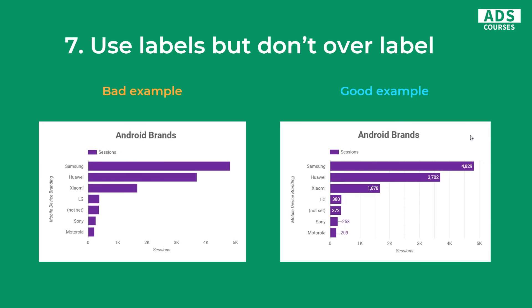Another example of labels: on the right, we use labels and we can tell the actual numbers from them — they are visible. On the left, we don't use labels, and it's actually difficult to tell how many sessions are generated from certain brands like Samsung. I can tell that it's almost 5000, but I don't know exactly how many. So when it is possible, you should use labels, but only when they are visible.